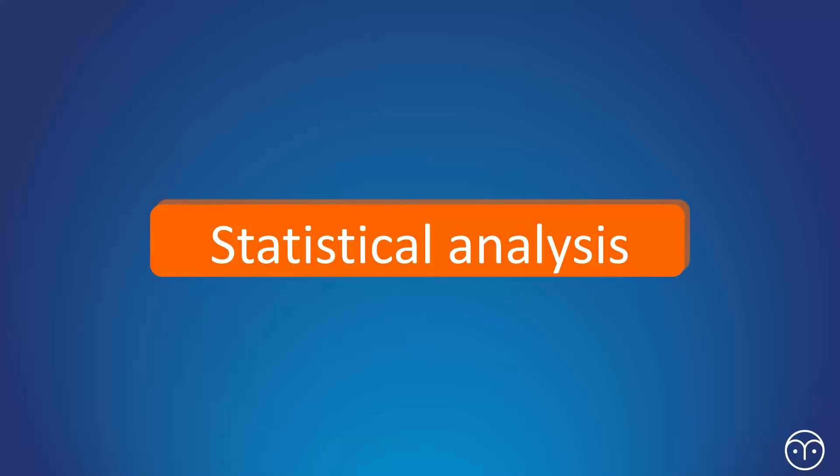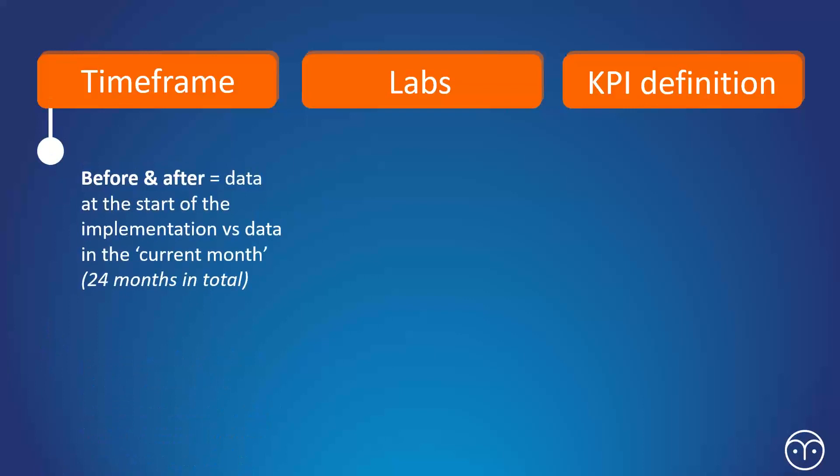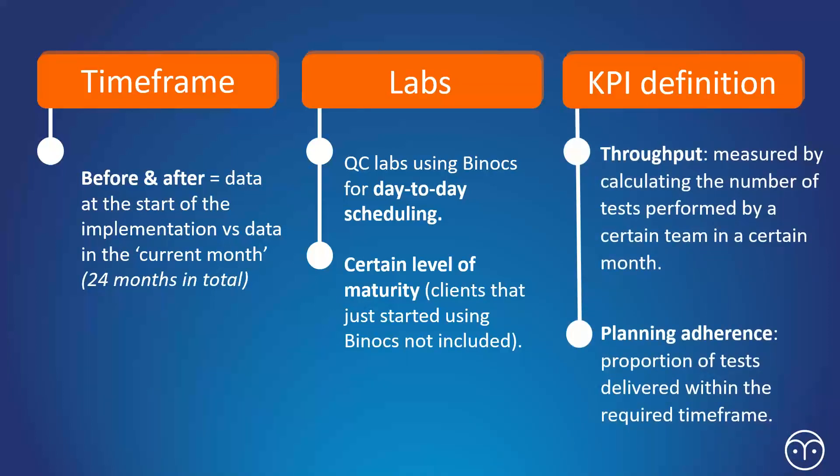These are users who have more than 24 months of data. So if we look at the timeframe, basically it's before and after data. It's over a 24 month period. It's specifically QC laboratories that are using Binox for day-to-day scheduling. And obviously they have a certain level of maturity, so they've been using it for a while. And there are two main KPIs that we're going to look at. There's throughput, which is a measure, calculated, which is basically the number of tests performed during a particular time during that particular period. And then there's planning adherence. So the proportion of tests delivered within the required timeframe.